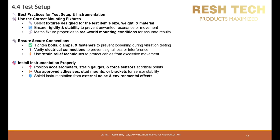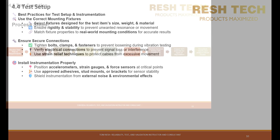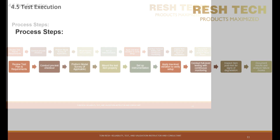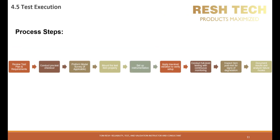The vehicle and test loads must match field conditions. Let's walk through a typical execution process: review the test plan and requirements, conduct pre-test checkout, perform modal survey if required, mount the test item properly, set up instrumentation, apply low-level vibration to verify setup, conduct full-level testing with continuous monitoring, and inspect the item post-test for signs of degradation.